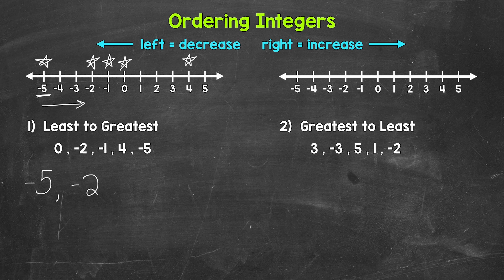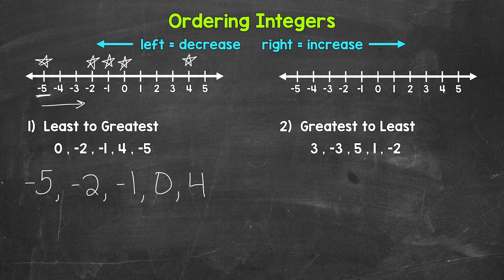Working from least to greatest, next is negative two, then negative one, then zero, and then lastly the greatest — four. So negative five, negative two, negative one, zero, and four. I also like to relate this to temperature: negative five degrees is the coldest temperature here, and we work our way up to the warmest temperature, four degrees. Just a different way to think through these.